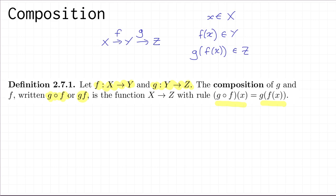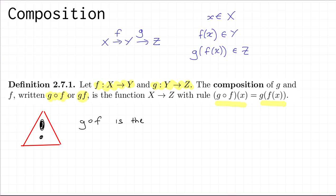That can seem a little bit confusing, so I want to make the point that it really does matter which one you do. I'm going to draw my danger symbol here. The danger symbol is to tell you that g∘f, written like this, is the function whose rule is "do f, then do g" — because g∘f applied to input x gives g(f(x)), so we did f first.